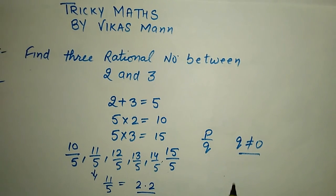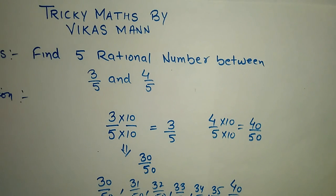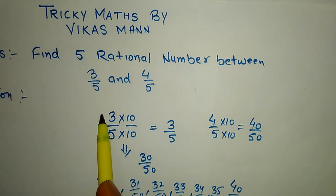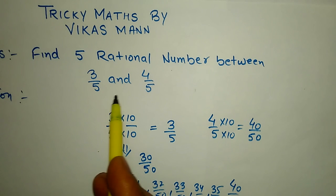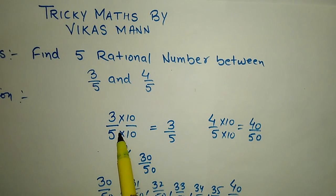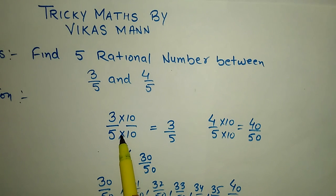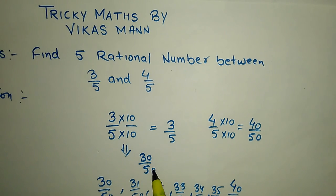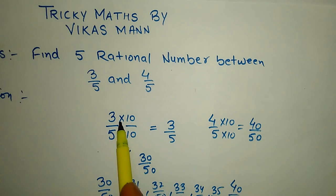We have another question with the same trick. Find 5 rational numbers between 3 by 5 and 4 by 5. You all see that 3 by 5 and 4 by 5 have the same base. We have to multiply and divide 3 by 5 with 10. We will get 3 by 5 same if we cut 10 by 10. But we have found another way, 30 by 50. If we multiply 10 with 3 and 5 with 10, we get 30 by 50. And the same process we will do with 4 by 5. We get 40 by 50.